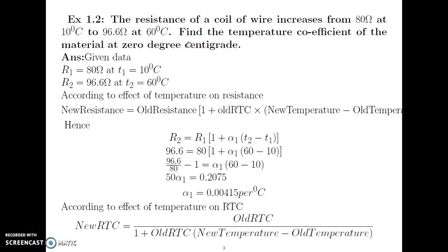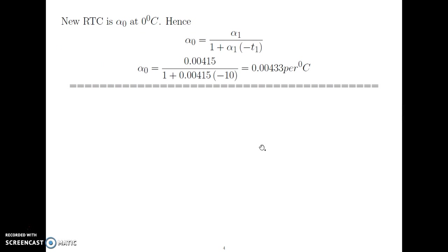Old RTC is the known value alpha1, divided by 1 plus alpha1. New temperature is 0 degree Celsius (related to alpha0), and old temperature is T1 equal to 10 degree, which is related to alpha1. Substituting these values — alpha1 equal to 0.00415 and T1 equal to 10 — we get alpha0 equal to 0.00433 per degree Celsius.